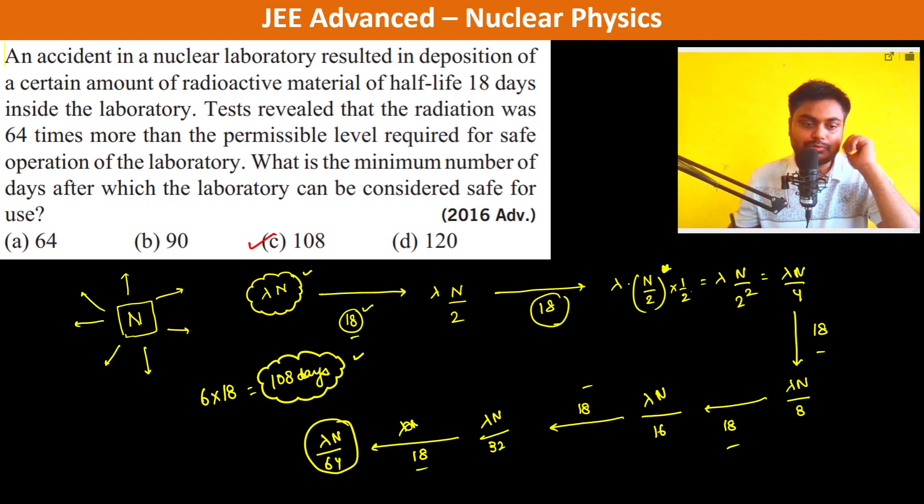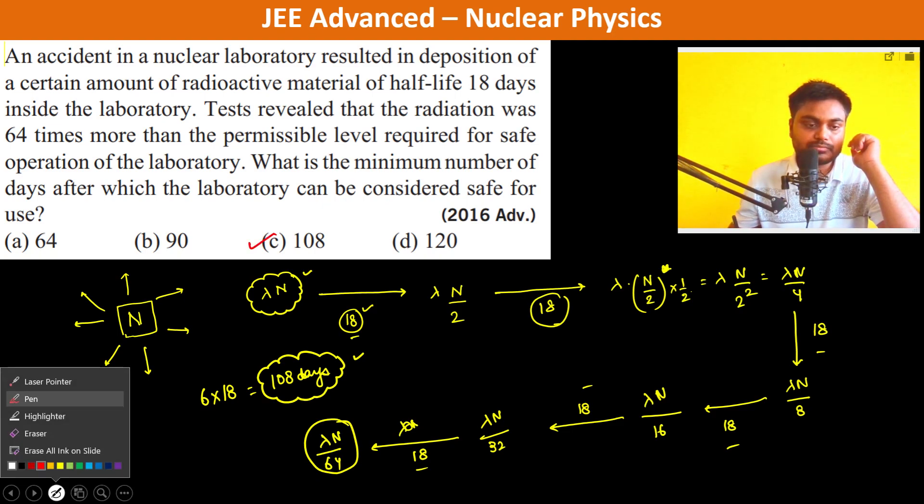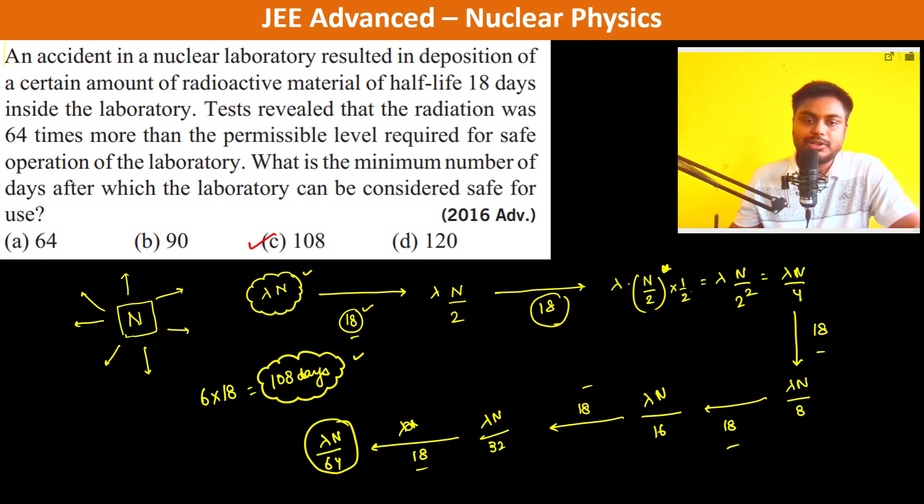We can even use this formula also. We can create a formula. Like this, see, first 18 days, so it's 1. After 2 18 days, it's 2 square. So therefore, after n half-lives, it's going to be N by 2 to the power n.